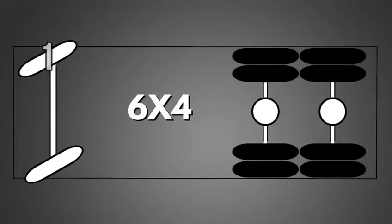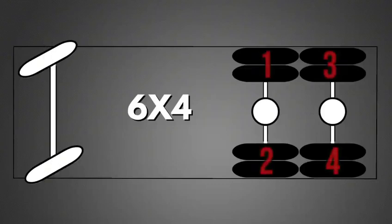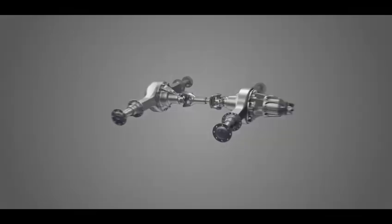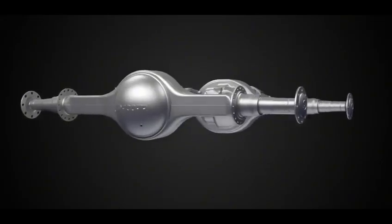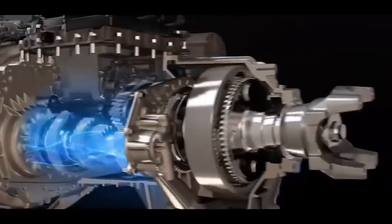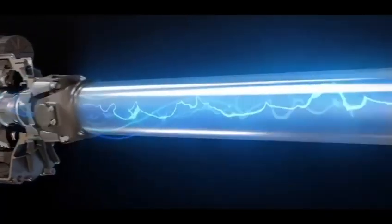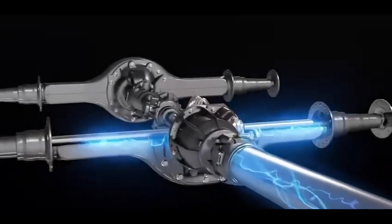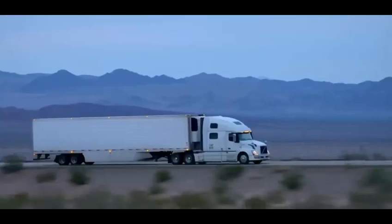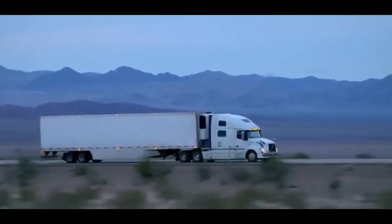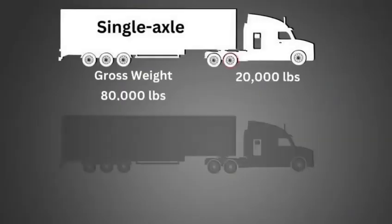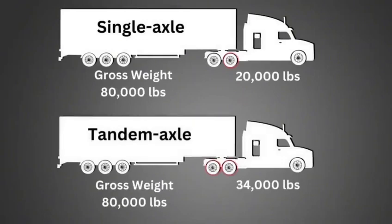The 6x4 means that there are six wheels on the vehicle and that four of them are powered, also known as a tandem. Here both your rear axles are powered by the powertrain all the time, which gives great traction in all weather conditions. This type of configuration is commonly used in America because they are allowed to drive with 34,000 pounds on a tandem axle where a single axle only is allowed to 20,000 pounds.